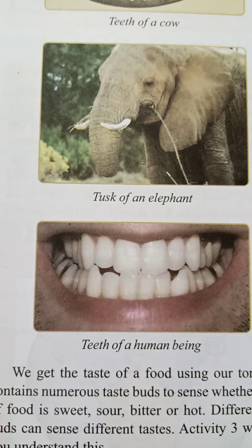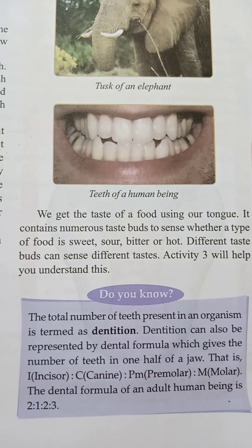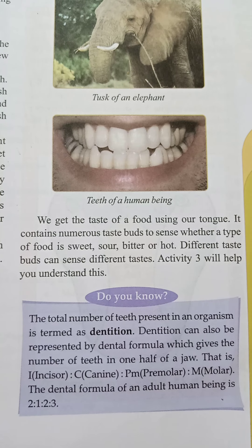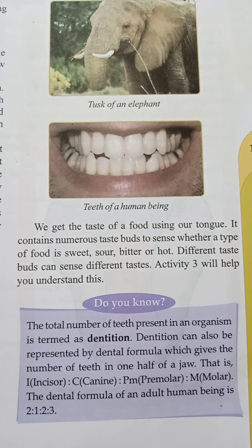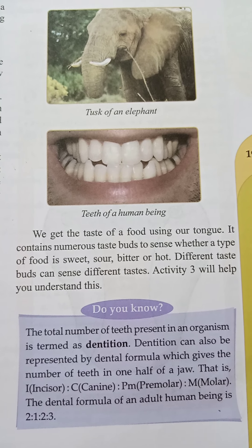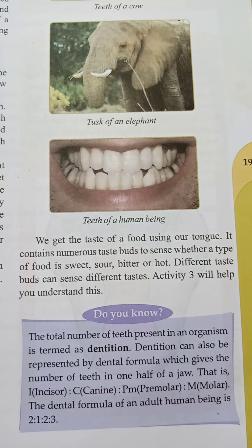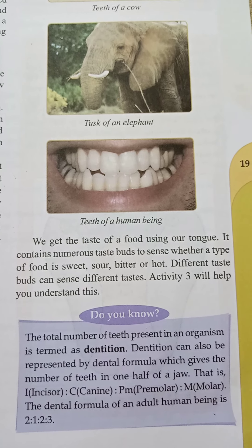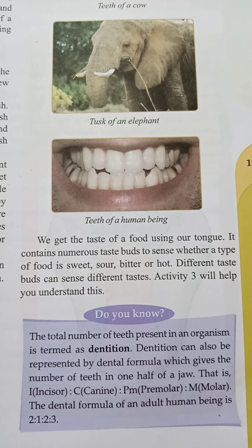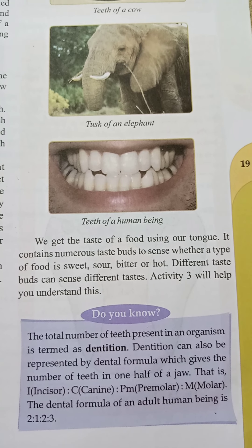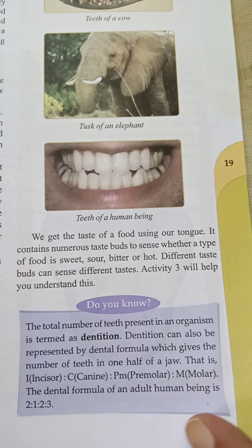We get the taste of food using our tongue. It contains numerous taste buds to sense whether a type of food is sour, bitter, or hot. Different taste buds can sense different tastes — sweet, sour, bitter, or hot. Activity number 3 will help you understand this.